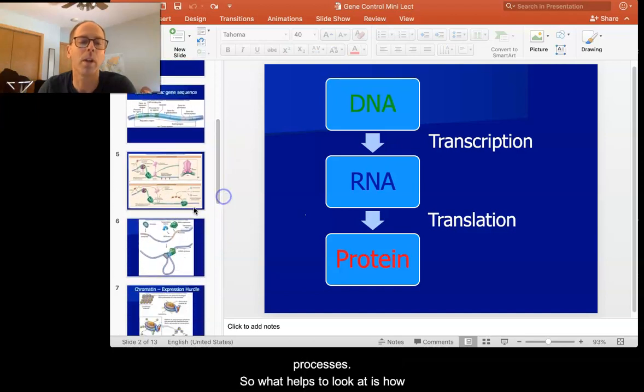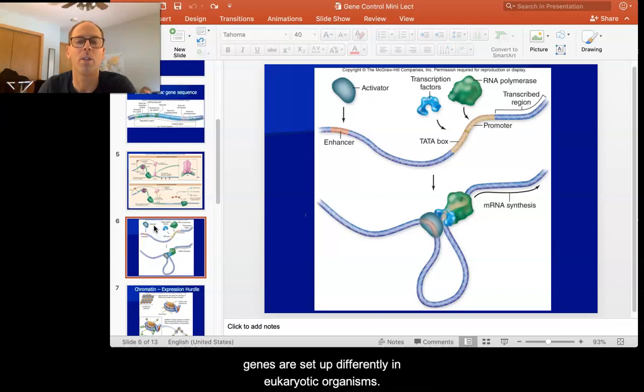What helps to look at is how genes are set up differently in eukaryotic organisms. In eukaryotic organisms we have our promoter region. We talked about this in class. We have this kind of weirdly named region of the promoter, this thing called the TATA box. It's called that because the genetic code actually reads thymine, adenine, thymine, adenine.